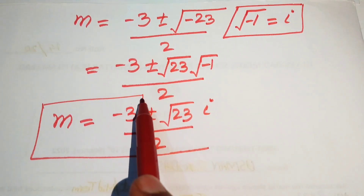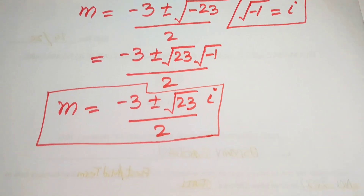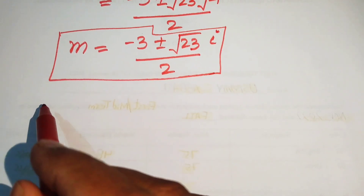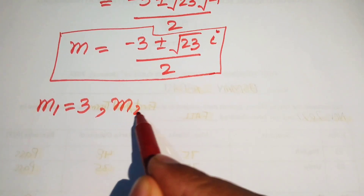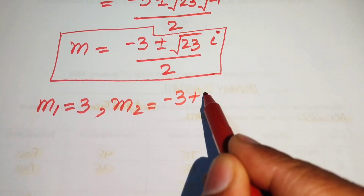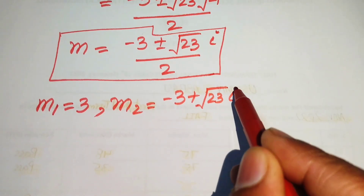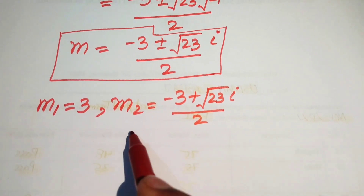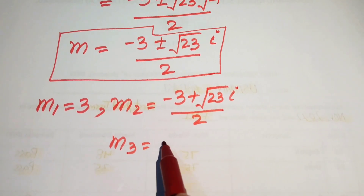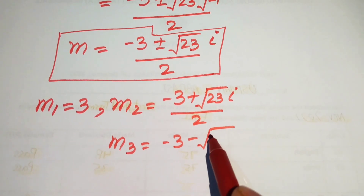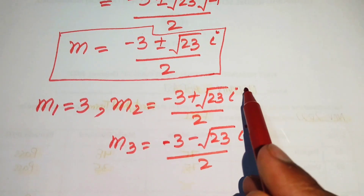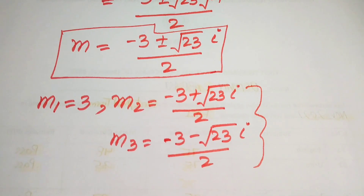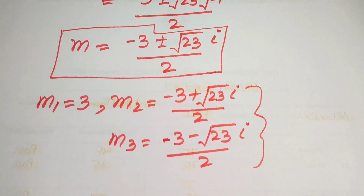These are the other two complex roots of the given equation. Finally, the three roots of the given equation are: m₁ equals to 3, m₂ equals to (minus 3 plus square root of 23 iota) divided by 2, and m₃ equals to (minus 3 minus square root of 23 iota) divided by 2. This is the final answer. Thank you so much for watching this video — please subscribe to my channel for more exciting videos.